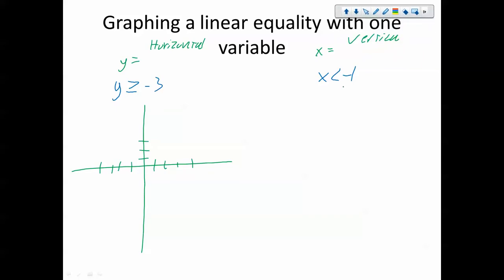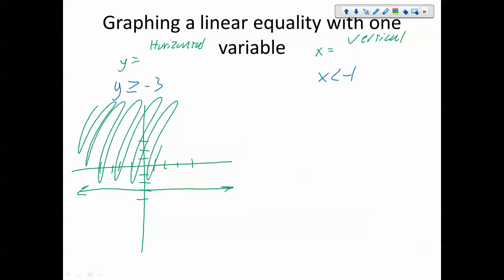So the way that we do it is the same thing that we did on the previous ones. We graph the line. We shade in the side that has solutions. This is that y is negative three. This is a solid line. So y is negative three, solid line. And then which side do we shade? Well, it says y is greater than. Which means I am shading everything that is greater than. So this is the shaded side.